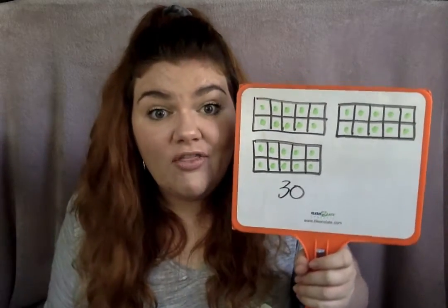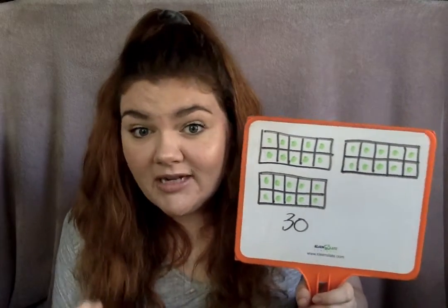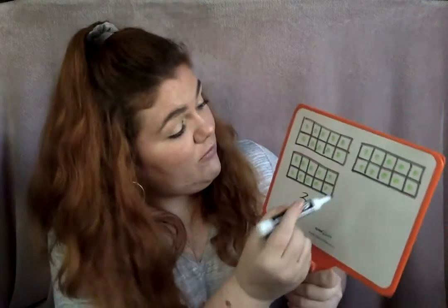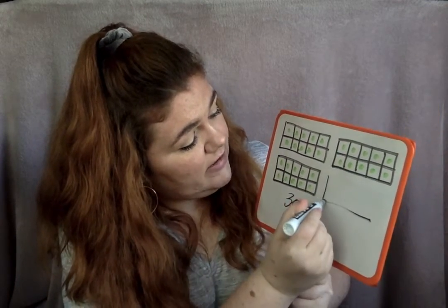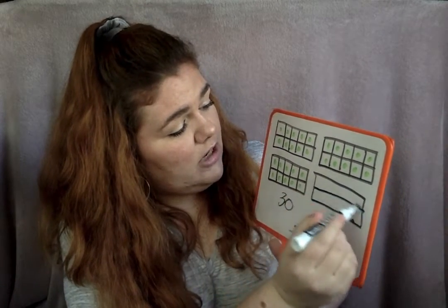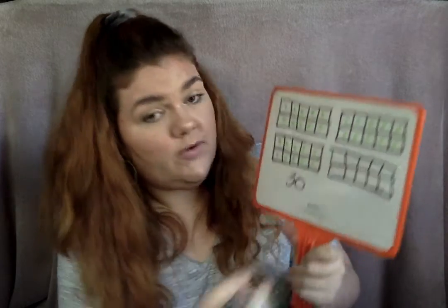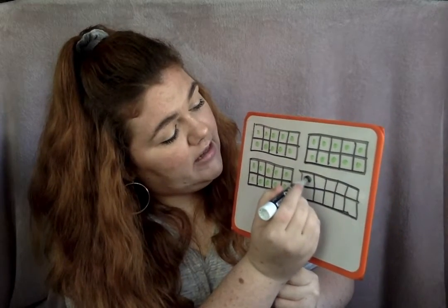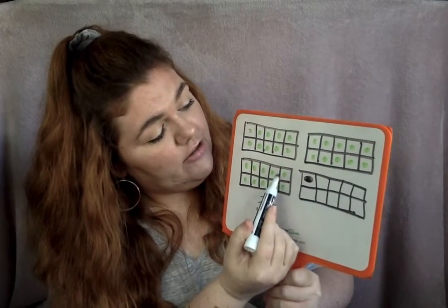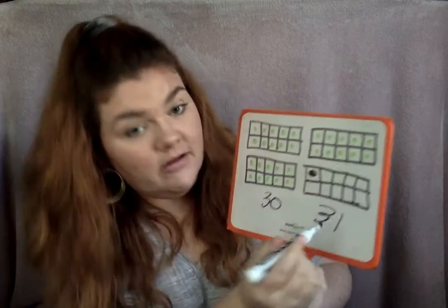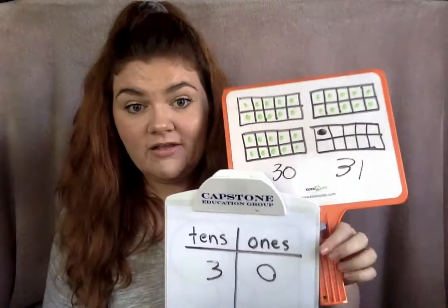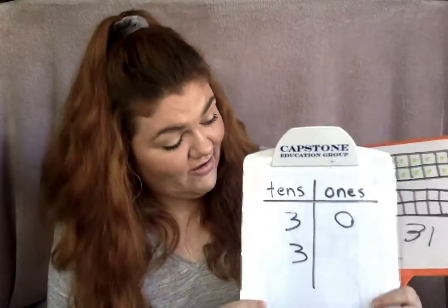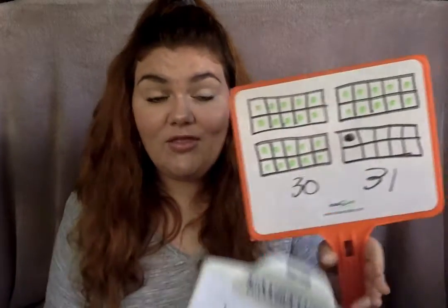Now you need to draw another 10 frame, or you can just draw one more dot, but I want you to practice drawing another 10 frame. So if I'm going to draw one more than 30, it's going to be 31. A 10 frame looks like a rectangle — it is a rectangle. It has one line going across, and one, two, three, four lines going down. All I need to do is draw one more dot to make — 10, 20, 30, 31. If we were looking at our T-chart, we now have three 10s and how many ones? One. Three 10s, one one. One more than 30 is 31.